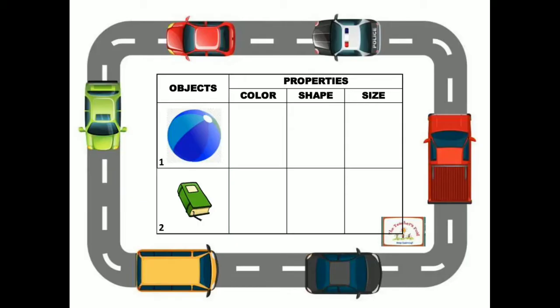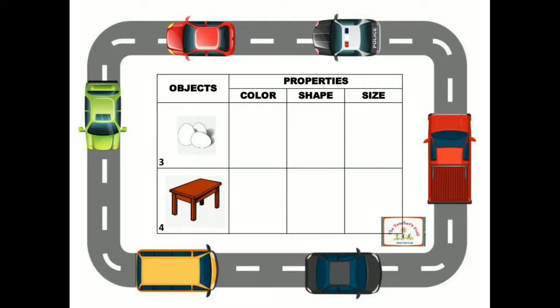What is its size? Do the objects have the same color? The third picture is an egg. What is its color? What is its shape? What is its size? The fourth object is a table. What is its color? What is its shape? What is its size?